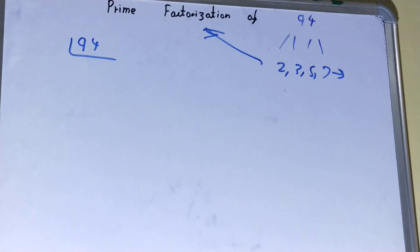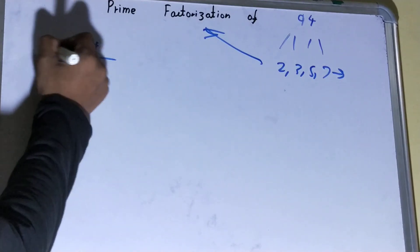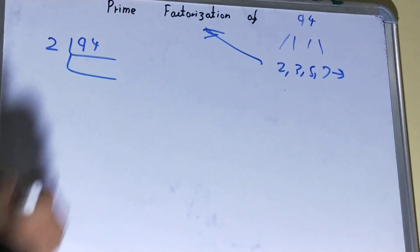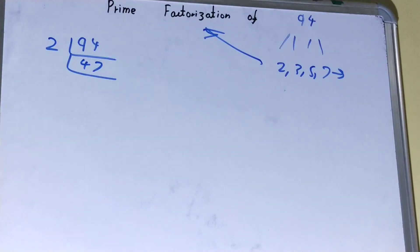Is this 94 divisible by 2? It clearly is, so we'll divide it and we will be having 47. Next, is this 47 divisible by 2? It is not. If you try it with 3 also, it will not.